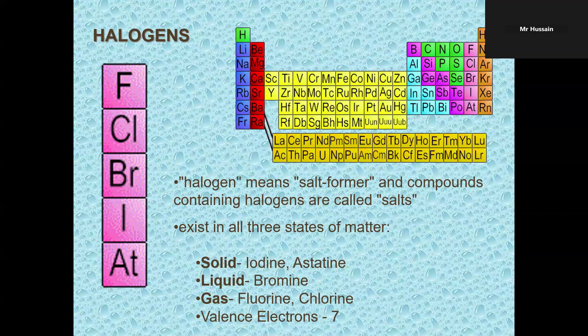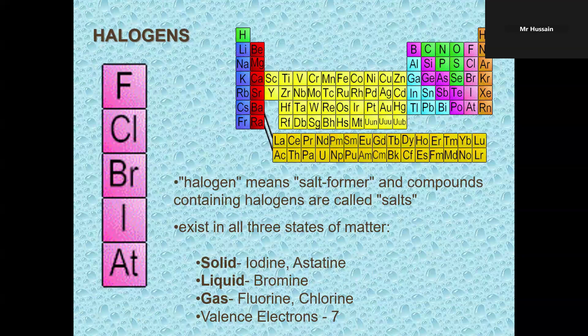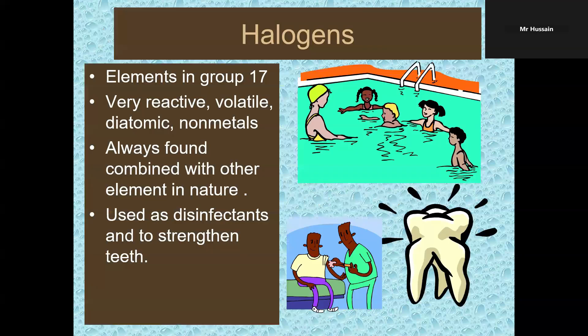Halogens, group 17. Most active non-metals. In this group, iodine and astatine are solid, bromine is a liquid, fluorine and chlorine are gases. Halogens have seven valence electrons. Halogens are very reactive, volatile, also diatomic, means when they participate they always participate with two atoms. Always found combined with other elements in nature. They are used as disinfectants, and they provide strength to your teeth.